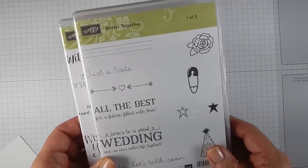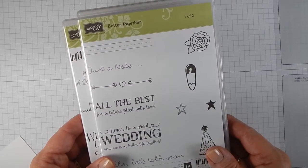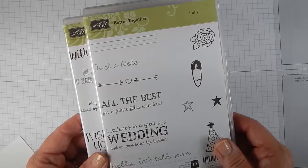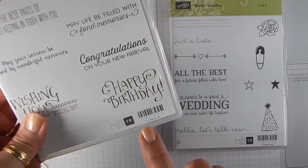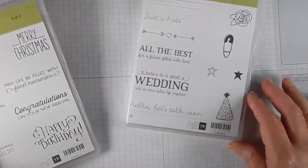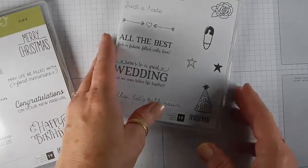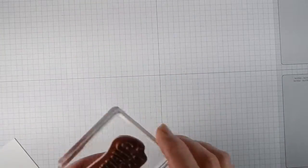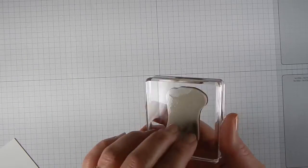This stamp set is really good for a beginner because not only does it have the outside sentiment, it also has the inside. We're going to be using this Happy Birthday and this Birthday Hat. I already have the stamps mounted. These are what are called clear mount stamps and this is your clear block.